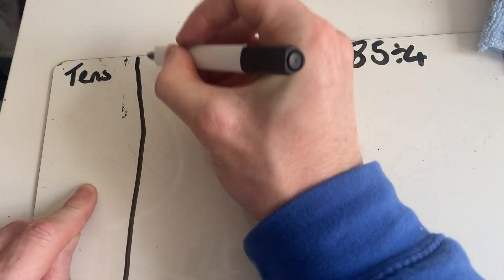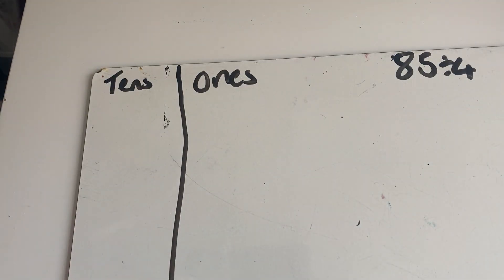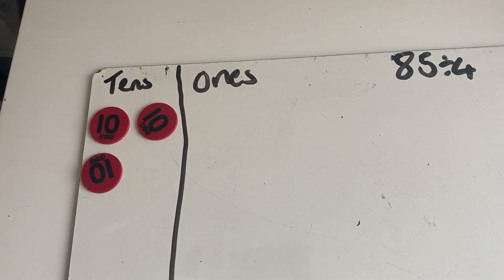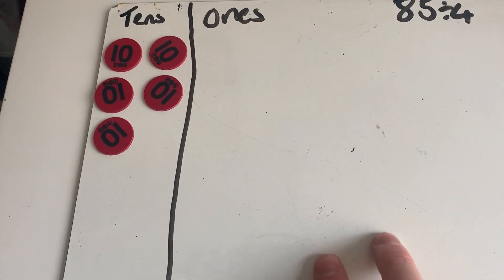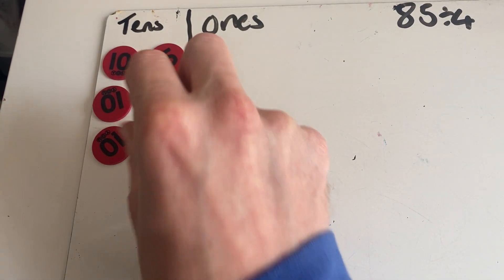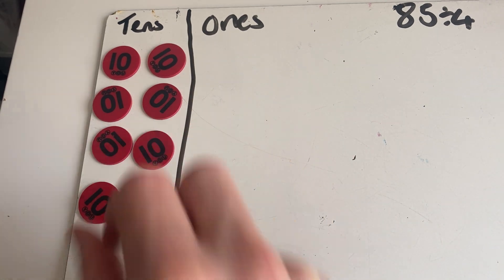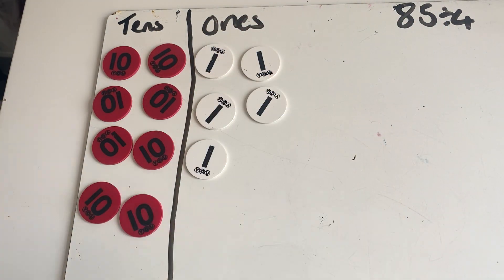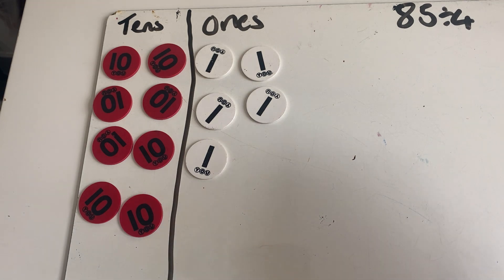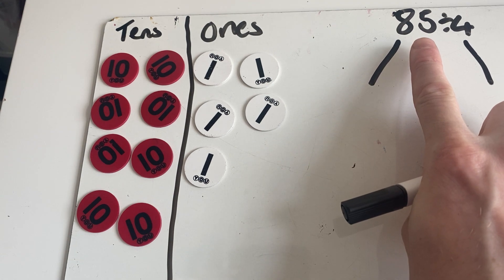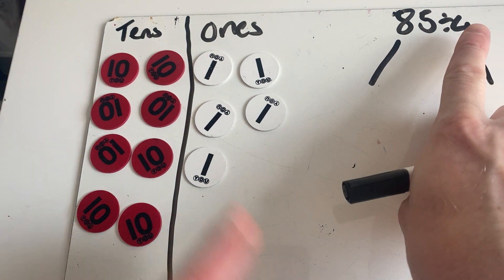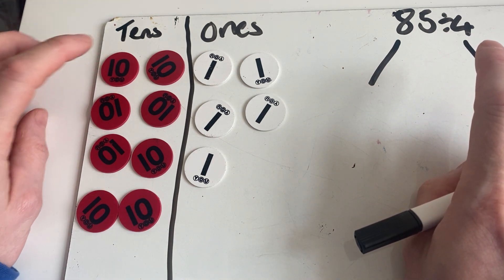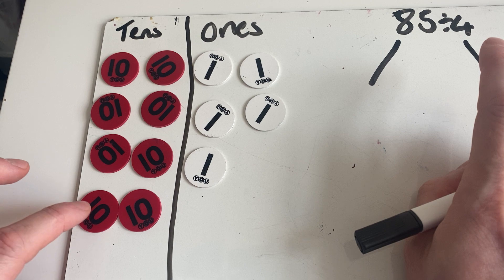I'm just going to draw my columns. If you've got the opportunity to draw the columns and then draw circles, if you don't have place value counters it's a really good way of visualizing it. So we need to have eight tens - three, four, five, six, seven, eight - and we need five ones - one, two, three, four, five. We want our tens to be split into four equal parts, and so do our ones.